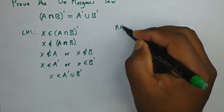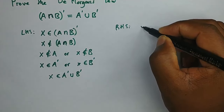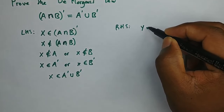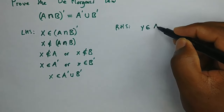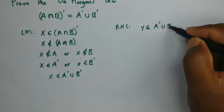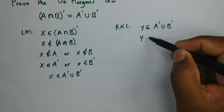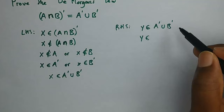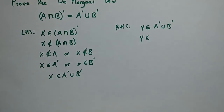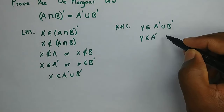Now let's work on the right hand side. Working on the right hand side is as simple as doing the reverse of what we've done. Let's assume y is a member of A'∪B'. Since what we're looking for is an intersection, we note that y is a member of the complement and the other complement, so we can say y is a member of A' and...